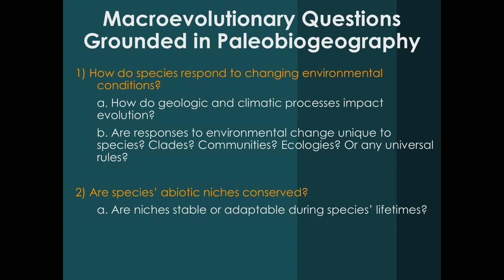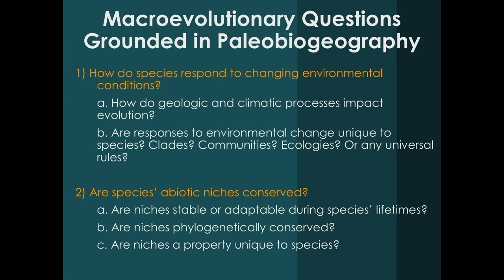I'm also interested in better quantifying how species' abiotic niches may be conserved. At one scale, I look at whether niches are stable or whether they might change during a species' lifetime. I'm also interested in whether, if niches are stable during a species' lifetime, a speciation event might result in modification of abiotic niches or whether they're phylogenetically conserved — that is, do sister taxa tend to have abiotic niches more similar to each other than species that are less closely related? And if niches are stable and phylogenetically conserved, are abiotic niches a property unique to the species level?